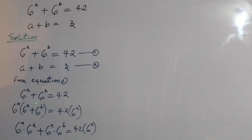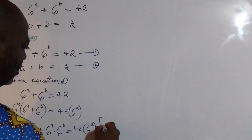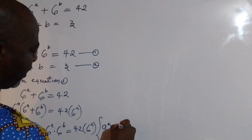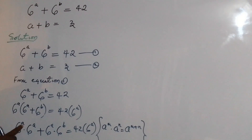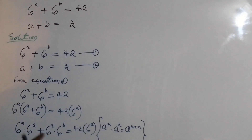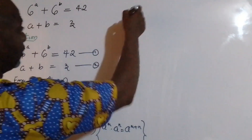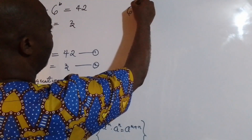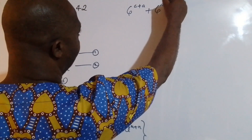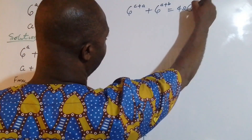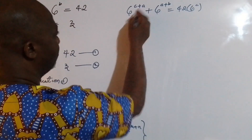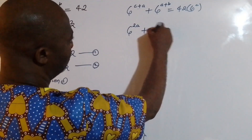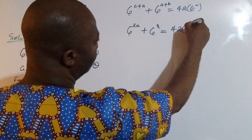Now I'm going to apply the law of indices: a^m × a^n = a^(m+n). When you have the same base with separate powers, we add the exponents. Applying this gives 6^(a+a) + 6^(a+b) = 42 · 6^a. We already know that a + b = 3, so replacing a+b with 3 gives us 6^(2a) + 6^3 = 42 · 6^a.